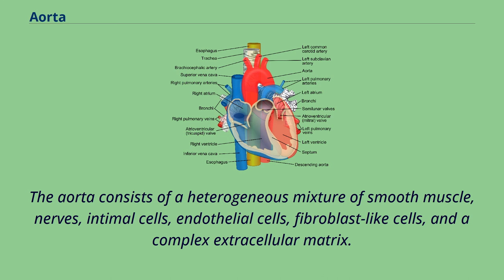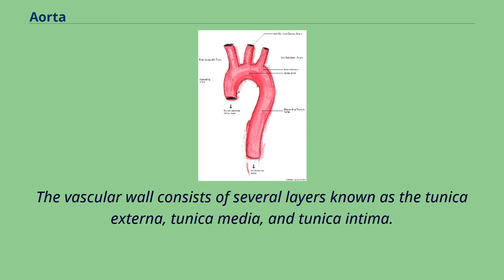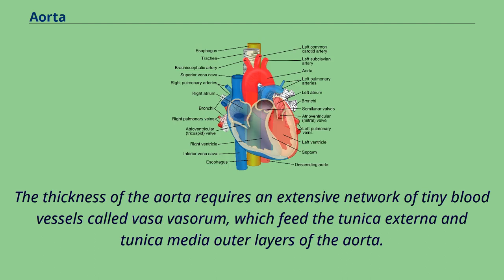The vascular wall consists of several layers known as the tunica externa, tunica media, and tunica intima. The thickness of the aorta requires an extensive network of tiny blood vessels called vasa vasorum, which feed the tunica externa and tunica media outer layers of the aorta.